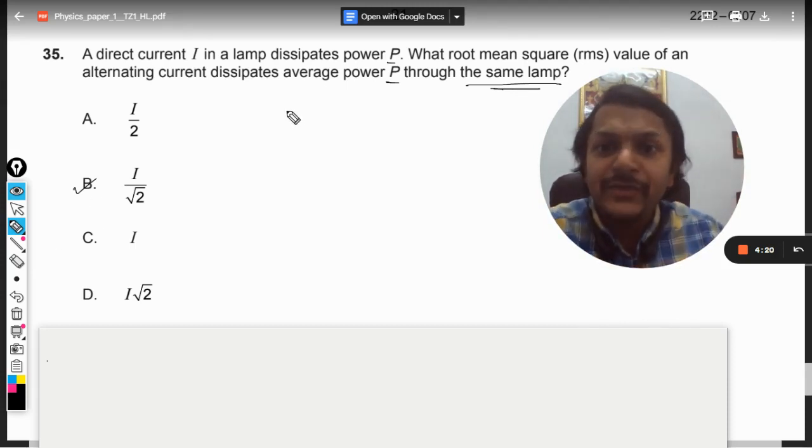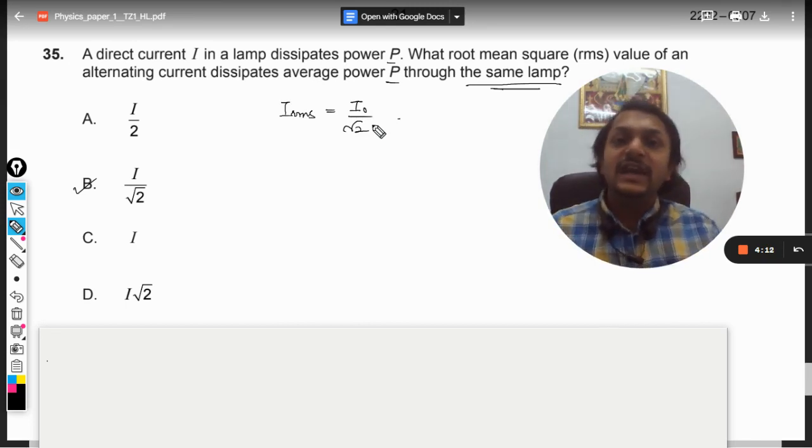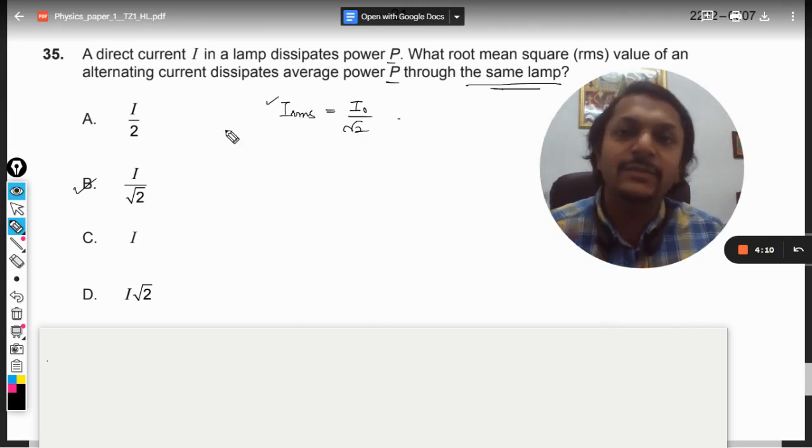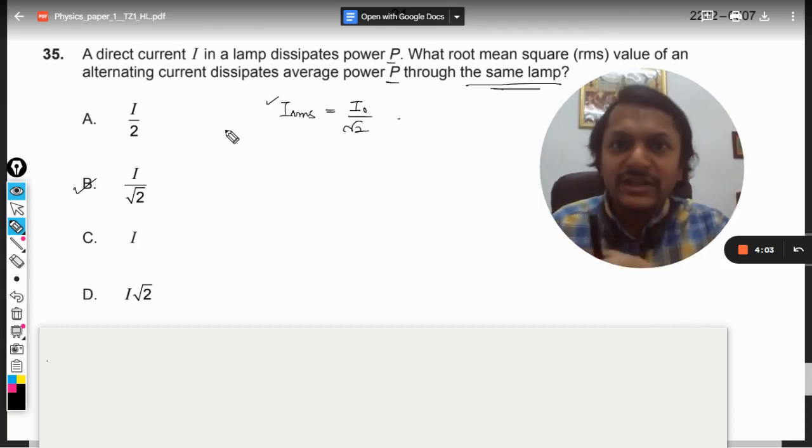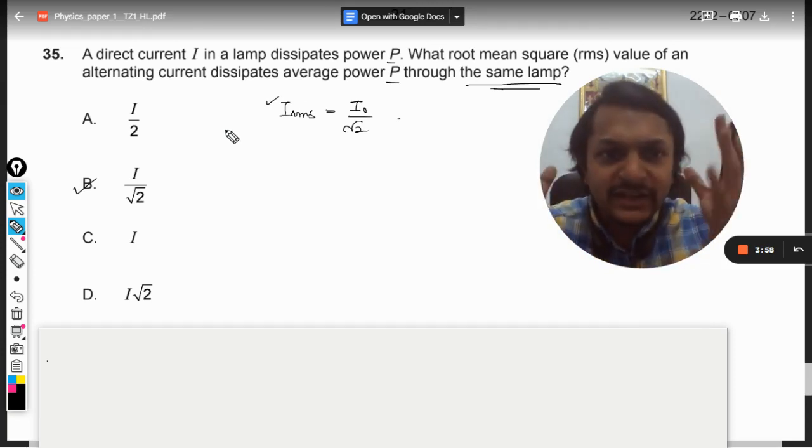Because we know that the root mean square formula is equal to peak value divided by root 2. And the second thing is that we also know that this can be derived by having this condition that the power output for the alternating current and for the DC current should be same. And from there, we would be able to find this formula.